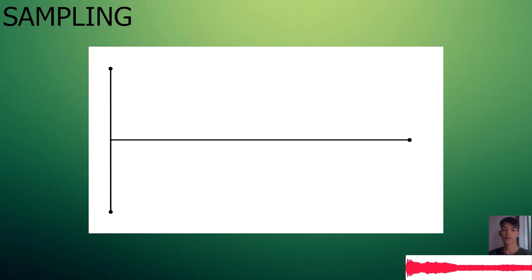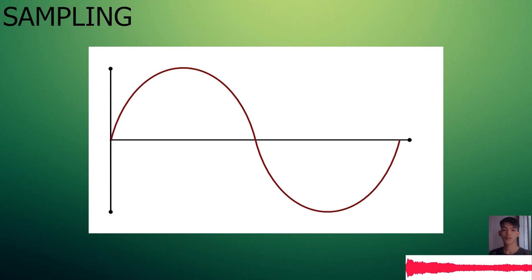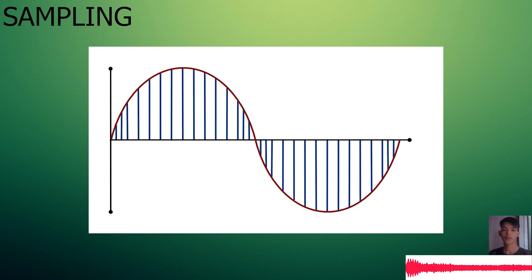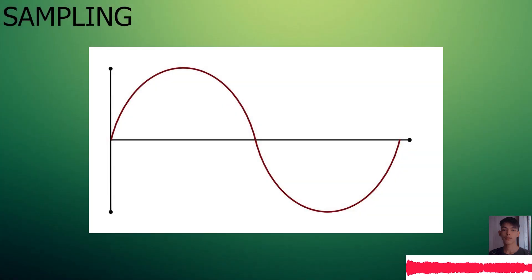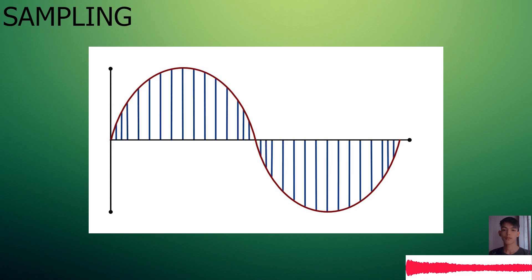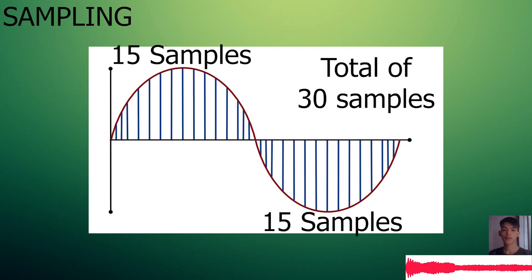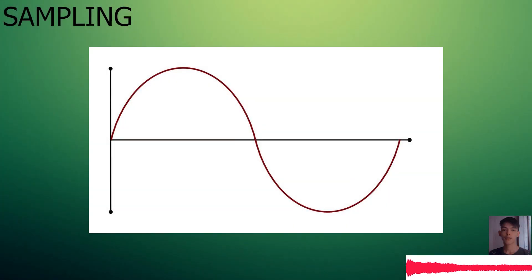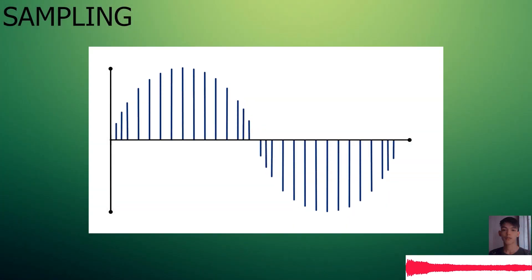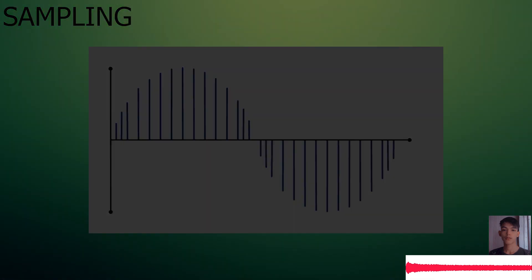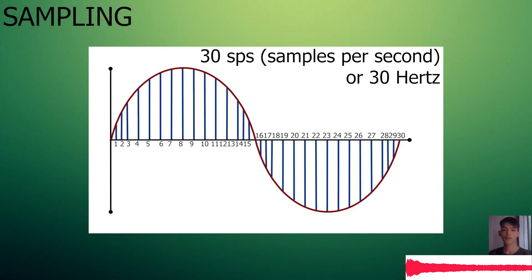PCM consists of three steps: sampling, quantizing, and encoding. Let's look at the first step — Sampling. Sampling is defined as the process of measuring the instantaneous values of a continuous time signal in discrete form. Samples are amplitudes taken from an analog signal over a constant time interval. Let's say a signal on the time domain is sampled 30 times per second — we take the instantaneous value of that signal over a constant time interval 30 times. We are just converting the continuous signal to a discrete signal, and the number of vertical lines depends on the sampling rate.